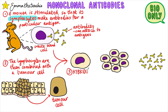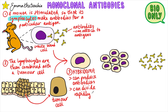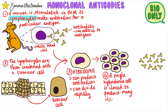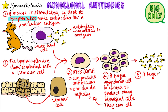Hybridoma cells have the properties of both cell types: they can produce antibodies like a lymphocyte and divide rapidly like a tumor cell. Single hybridoma cells are then cloned to produce many identical cells, which can all divide rapidly to produce the same antibody. A large amount of the monoclonal antibodies can then be collected and purified for use.